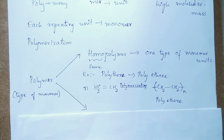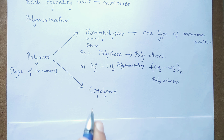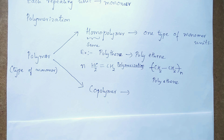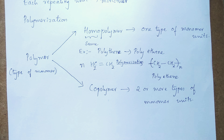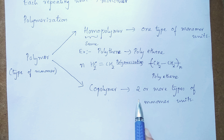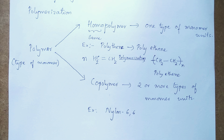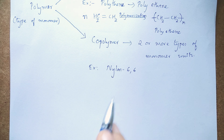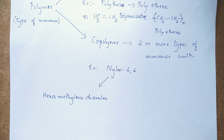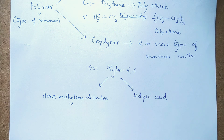The second type is copolymer. A copolymer is a type of polymer formed by the combination of two or more types of monomer units. The commonly known nylon 6,6 is an example of a copolymer — it is formed by the combination of two types of monomer units: the first is hexamethylene diamine and the other is adipic acid.